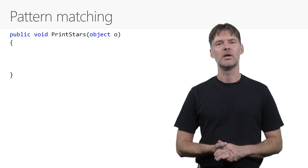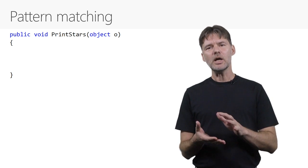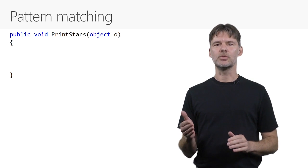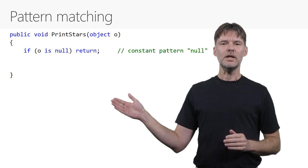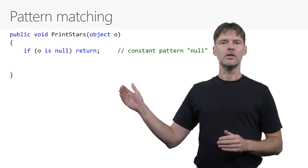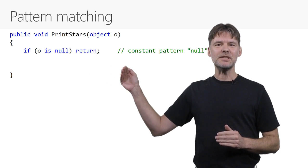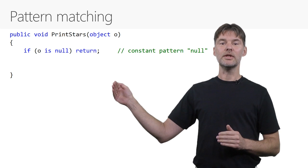Finally, let's look at pattern matching. Patterns are a new kind of construct in C# that can be used to test values in various ways. Among other places, patterns can be used in is expressions. Here is the simplest possible pattern, a constant pattern, here using the constant value null. The is expression here simply tests whether the given value o is null.